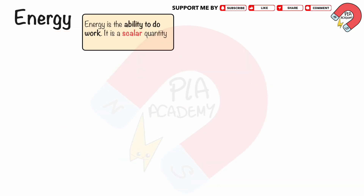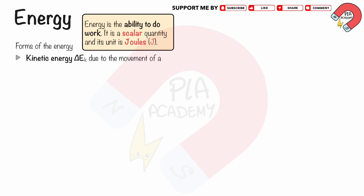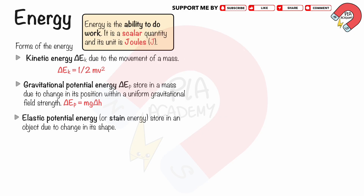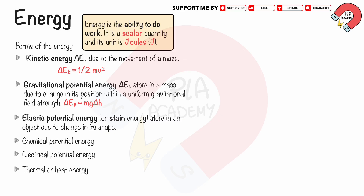Energy is the ability to do work. It is a scalar quantity, and its unit is joule. There are many forms of energy: kinetic energy is the energy due to the movement of a mass; gravitational potential energy is stored in a mass due to change in its position within a uniform gravitational field strength; elastic potential energy, or strain energy, is stored in an object due to change in its shape; chemical potential energy; electrical potential energy; thermal or heat energy; radiation energy, for example light, infrared or gamma; sound energy; and nuclear energy.